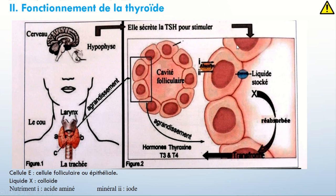Une fois que ces cellules vont recevoir la TSH, qui est l'hormone thyréostimuline sécrétée par l'hypophyse, les cellules folliculaires vont réabsorber la colloïde et la transformer, la diviser, la scinder en deux hormones qui sont T3 et T4. À savoir que la grande majorité de la fabrication hormonale de la thyroïde, c'est de la T4, de la thyroxine.